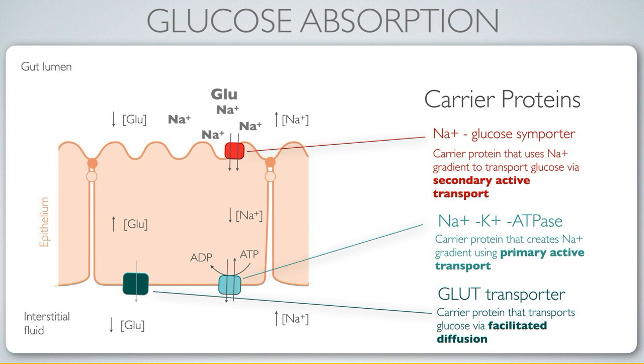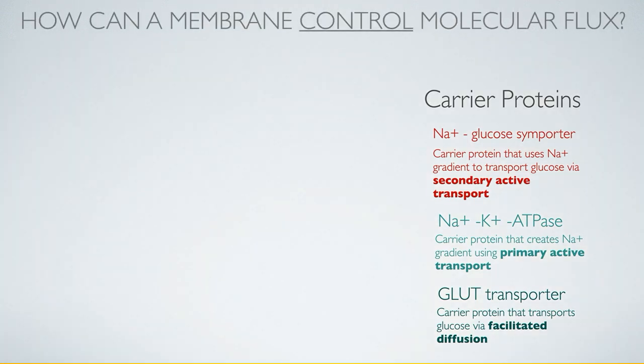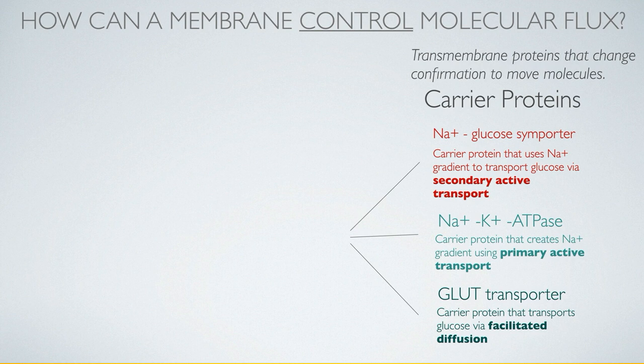This is getting at the question of how membranes control molecular flux. What we see here are three kinds of carrier proteins, characterized by how they use energy — or don't. Carrier proteins are transmembrane proteins that change conformation to move molecules, differentiated by how they use energy.